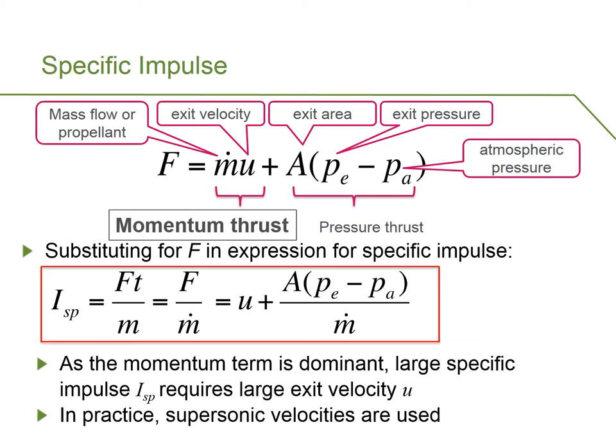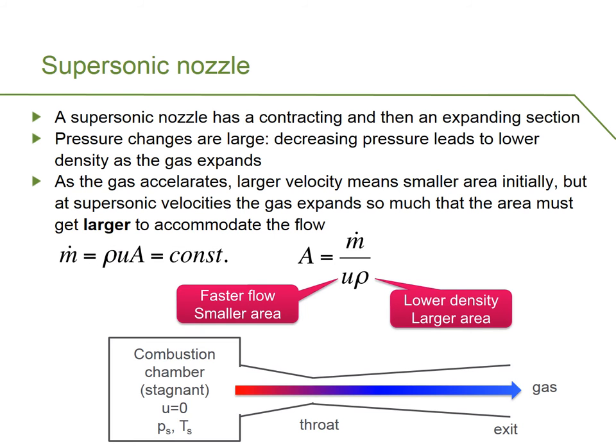In order to achieve large velocities, we generally find that in rocket engines, supersonic velocities are used. So velocities at the exit of rocket engines exceed the speed of sound. How do we achieve these supersonic velocities? Well, we use a supersonic nozzle, otherwise known as a Laval nozzle.